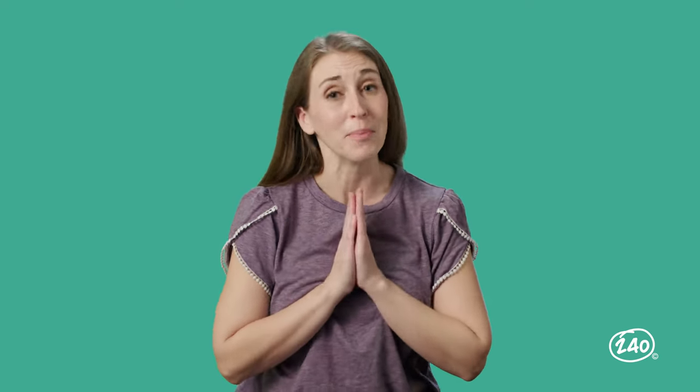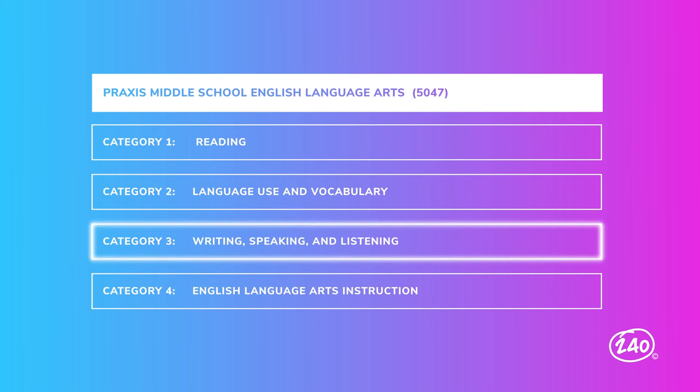Content category three covers writing, speaking, and listening. You can think of this one as your communication category. You'll need to know all about different types of writing in addition to making both oral presentations and written content effective. On your exam, you'll see questions that ask you to look at a piece of writing and choose the best way to improve it.